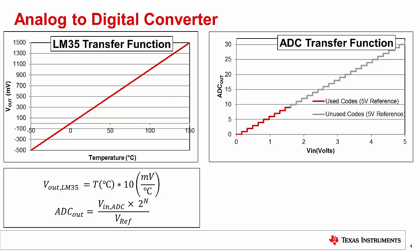Now since the reference voltage of an ADC is 5 volts, and the LM35 outputs only a maximum of around 1.5 volts, we won't use most of these codes if we use a 5-volt reference. The gray portion of this transfer function shows these unused codes.